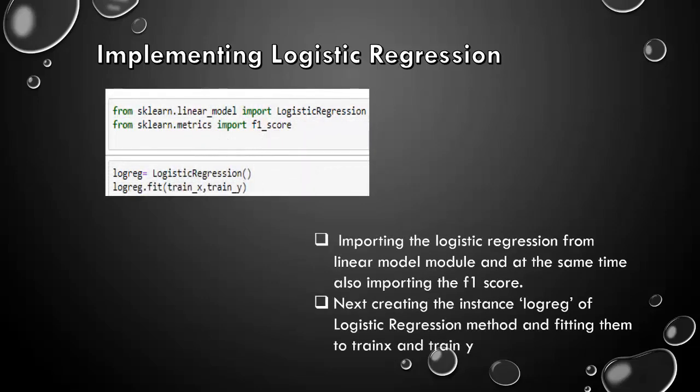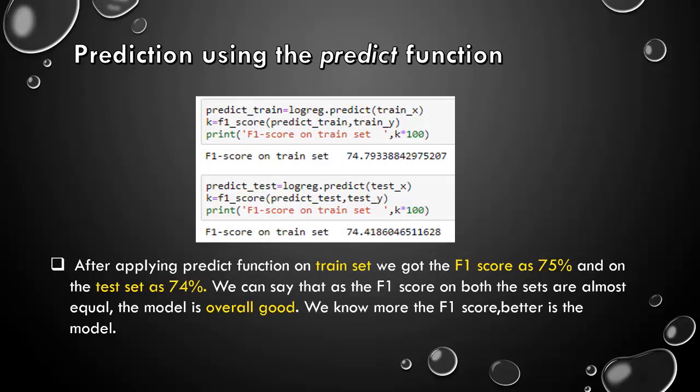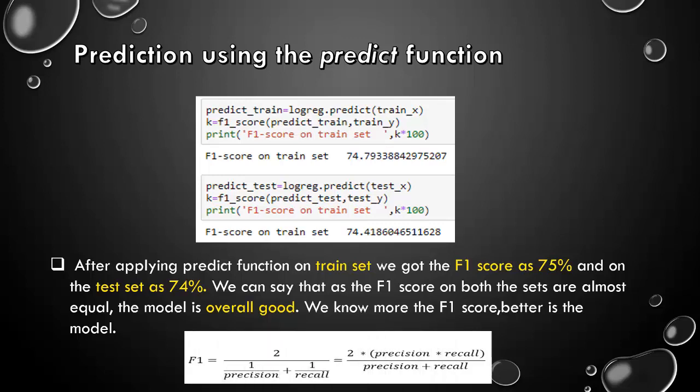So at first, we will be implementing a logistic regression model on this set. Let's import the logistic regression from the linear model module and at the same time also importing the F1 score, creating the instance logreg of logistic regression model and fitting them to train X and train Y. Now, doing the prediction using the predict function. After applying the predict function on the train set, we got the F1 score as 75% and on the test set as 74%. We can say that as the F1 score on both the sets are almost equal, the model is overall good. We know more the F1 score, better is the model.